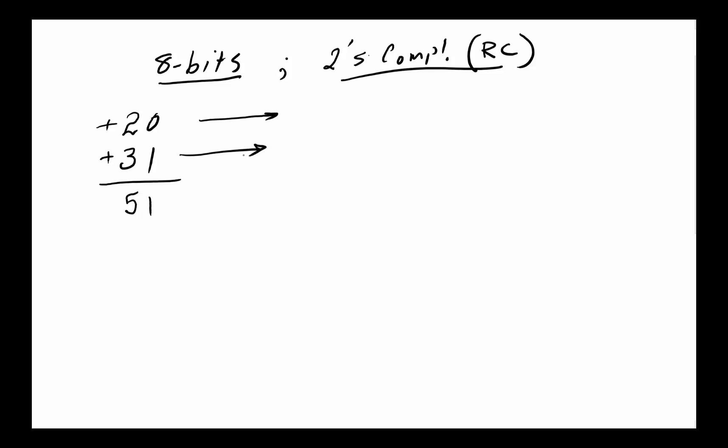In binary, these both have to be translated. 20 is 16 and 4. So that is 20 and we got to make sure there's 8 bits in here. So there's 8 bits and since it's positive we do nothing to it. And then 31 is going to be basically 16, 8, and 7. That's positive and then we're just going to add it.